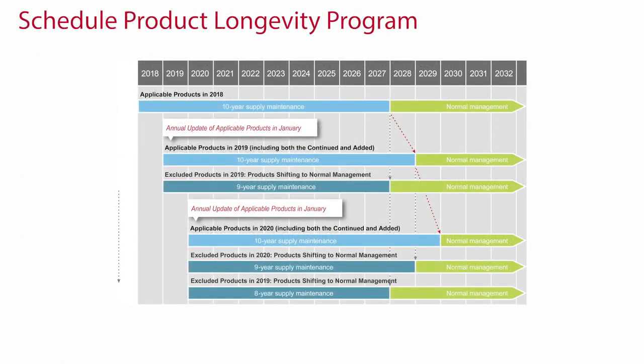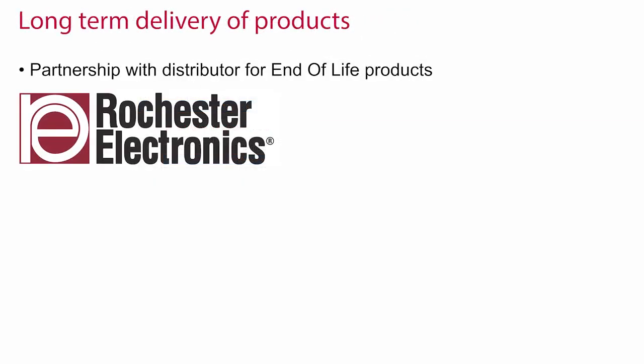The schedule of the product longevity program is as follows. In January, the product list is annually updated, meaning that a component can be added, continued, or excluded from the program. This list is published on our website. New and continued components remain available for at least 10 years, and parts excluded from the program fall back to normal management and may become end-of-life after 9 years. We provide a notice at least one year in advance when products reach their end-of-life. We sell out our excess stock of end-of-life components through our distributor Rochester Electronics, who have sales offices around the globe. Refer to their website for more information.